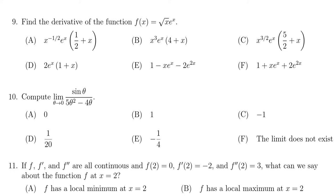We want to calculate the derivative, and I see we have a product of two functions: the square root of x times e to the x. So the derivative will be calculated using the product rule. We have to take the derivative of the square root of x times e to the x, and then take the square root of x times the derivative of e to the x.